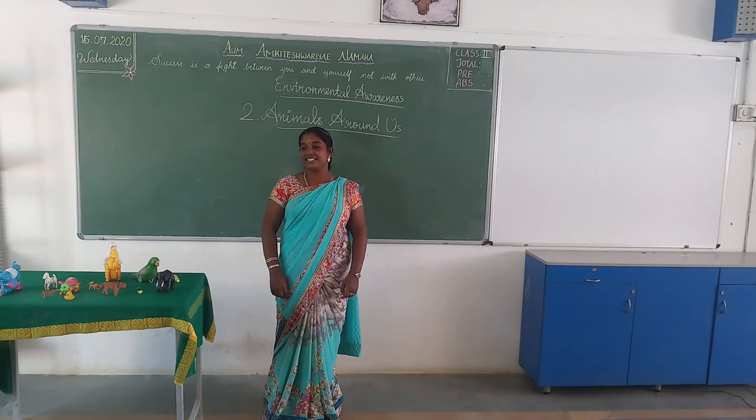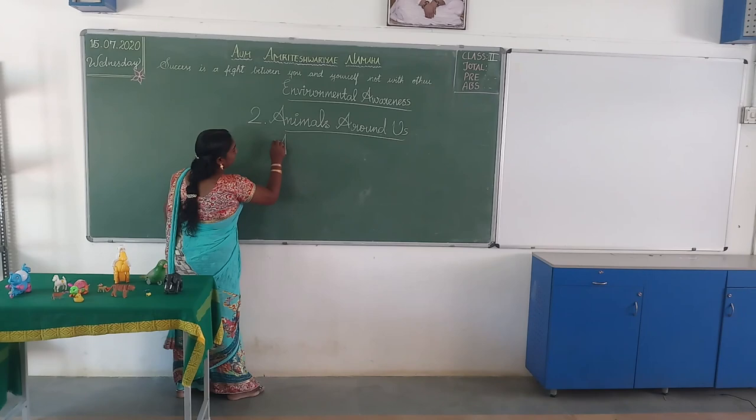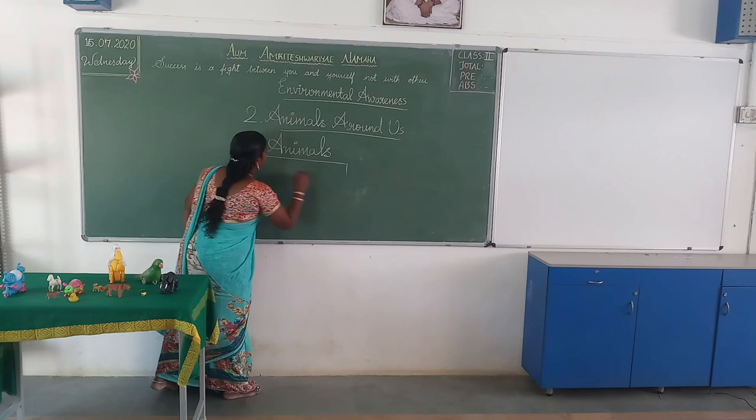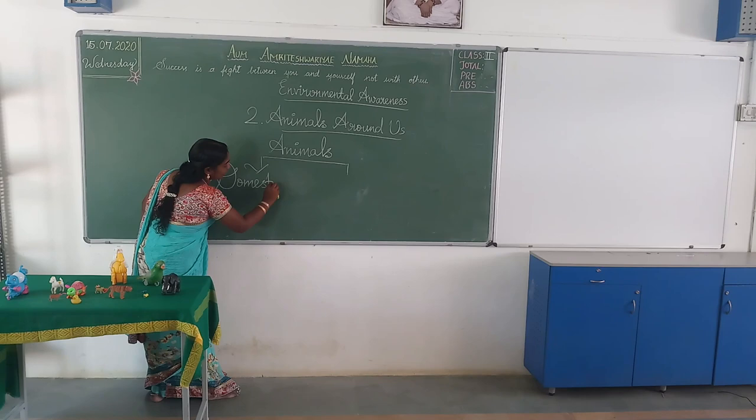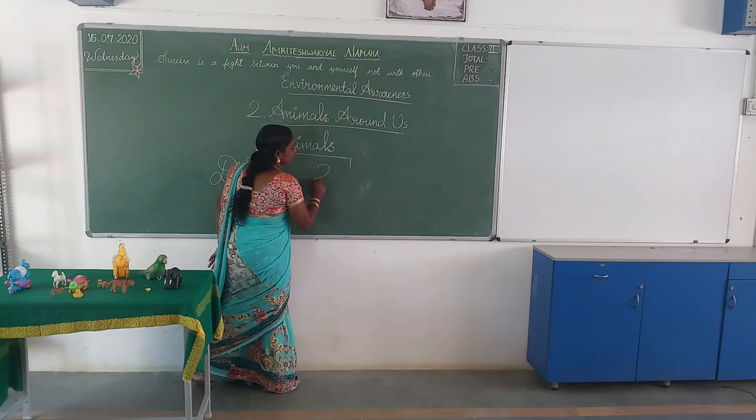These animals are of two types. Animals are how many types? Two types. One is domestic animals. Second one is wild animals.